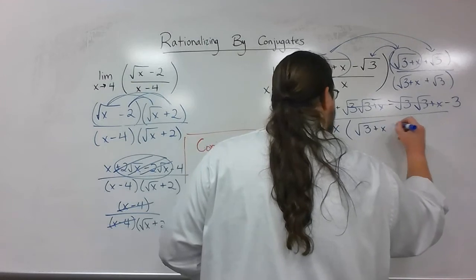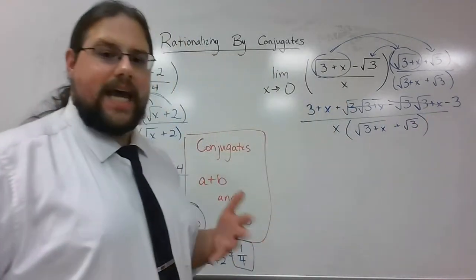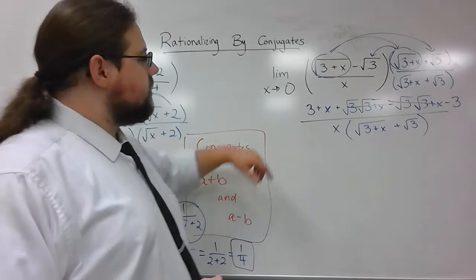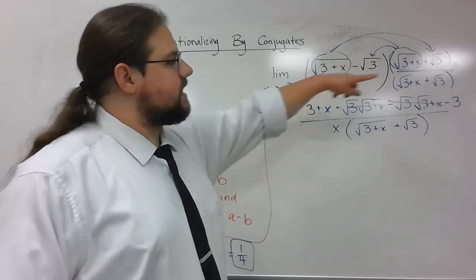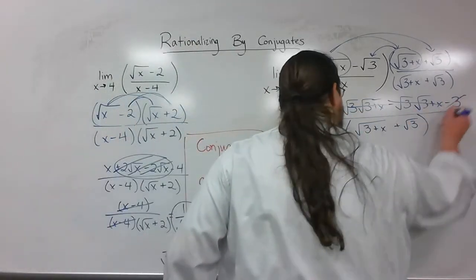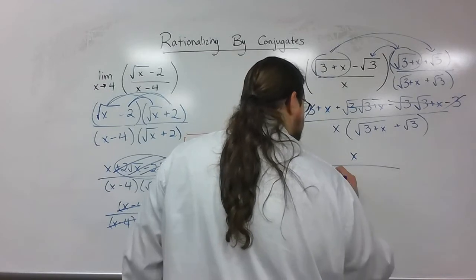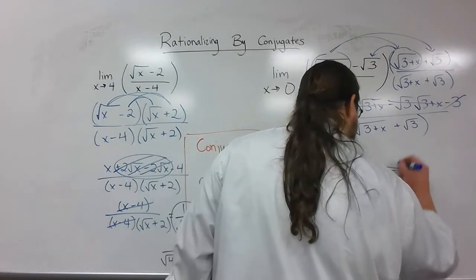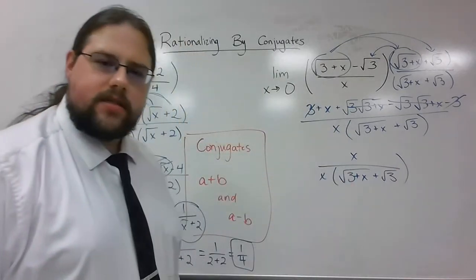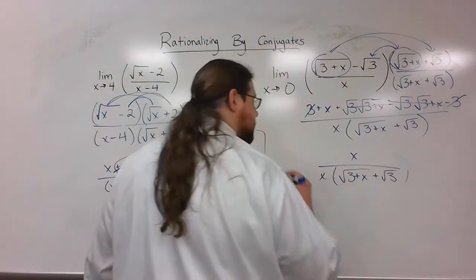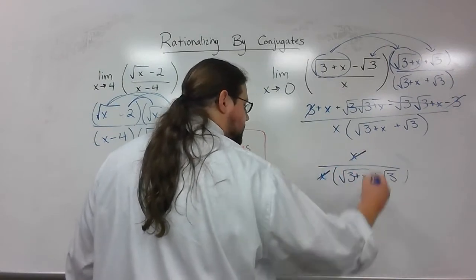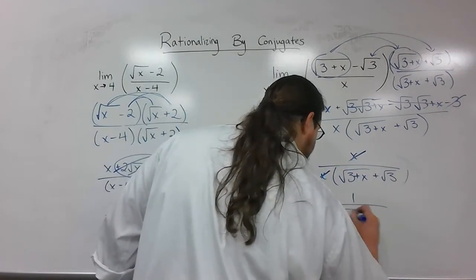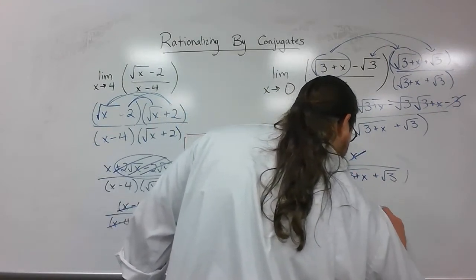Again, it's going to kind of do the same thing over here. So, 3 plus x minus 3. Those 3's are going to knock each other out. So, we're going to have x over x times the square root of 3 plus x plus the square root of 3. Look at those x's. I've got an x on top and an x on bottom. I made that parentheses really big for some reason. So, x and x, I'm going to have 1 over the square root of 3 plus x plus the square root of 3.